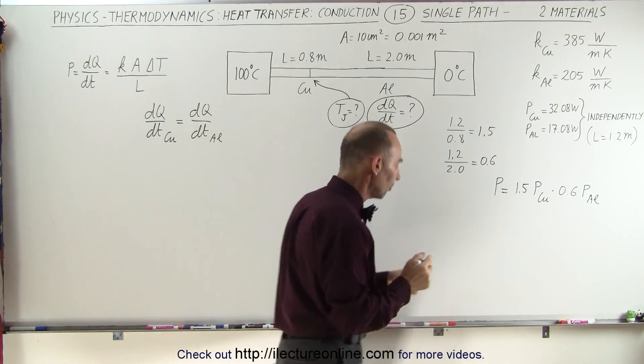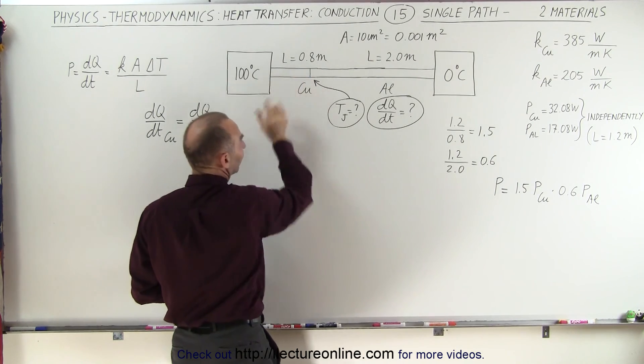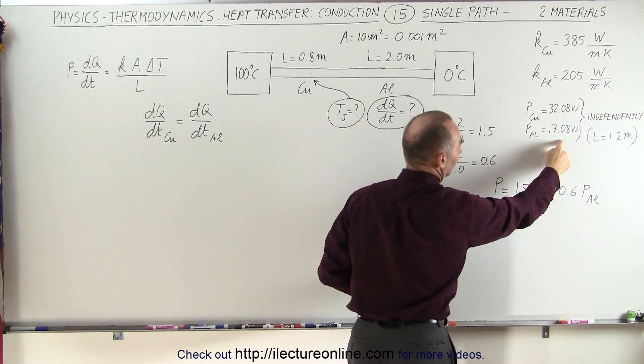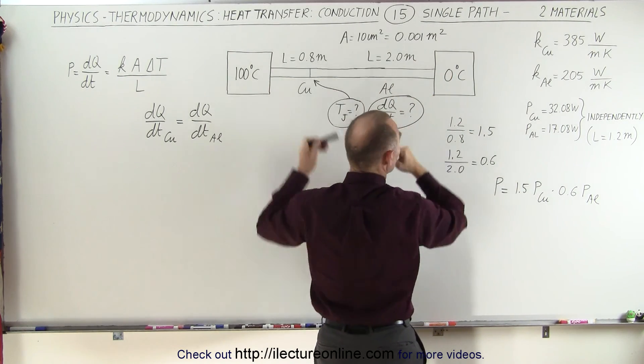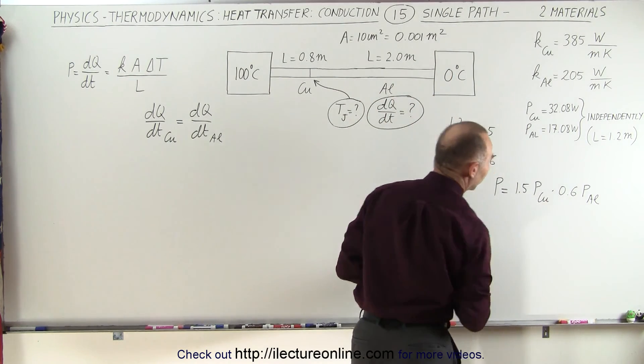And here's the logic behind that. If the length is less than the base comparison length of 1.2 meters, we have a higher factor. And if the length is longer, that means less heat travels through it, so we have a smaller factor.